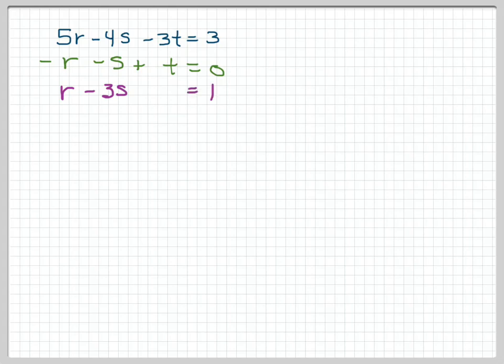Okay, so if we look at this system of equations, the first thing I'd like to notice is that this third one here is already missing t, which means I'm going to take these two and eliminate the t as well. I'm going to rewrite the top equation: 5r minus 4s minus 3t equals 3.